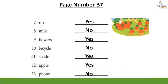Continuing page number 37. Eighth: milk — no. Ninth: flowers — yes. Tenth: bicycle — no. Eleventh: shade — yes. Twelfth: apple — yes. Thirteenth: phone — no.